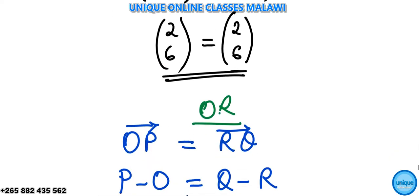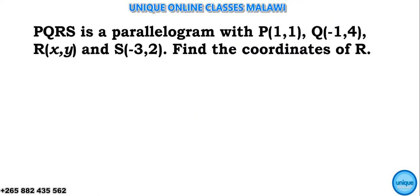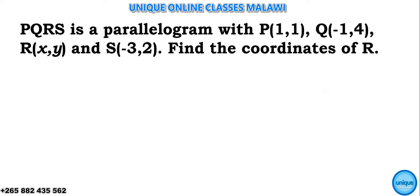The question is going to be like this: PQRS is a parallelogram with P(1,1), Q(-1,4), R, let's say X comma Y, and S(-3,2). We should be finding the coordinates of R.